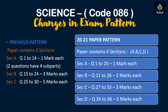In the new Science pattern, Section A has one-mark questions from question 1 to 20. Section B has two-mark questions from question 21 to 26. Section C has three-mark questions from question 27 to 33. Section D has five-mark questions from question 34 to 36.